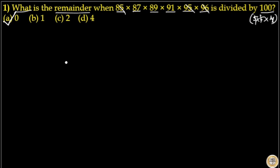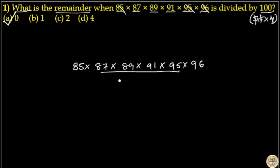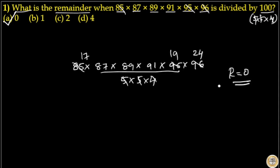So option A is your answer. 85 × 87 × 89 × 91 × 95 × 96 divided by 100: 5 cancels 85 giving 17, 5 cancels 95 giving 19, and 4 cancels 96 giving 24. That means there is no remainder, so the remainder is equal to 0.